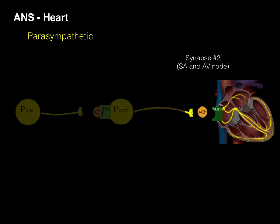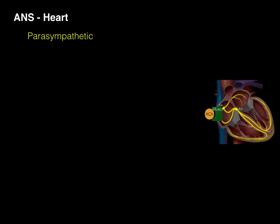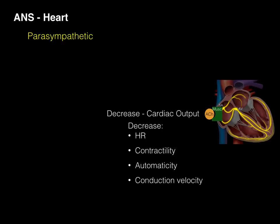Synapse number two is at the SA and AV node as well. This is a different type of cholinergic receptor — acetylcholine is now going to bind to a muscarinic receptor. When it binds to that muscarinic receptor, it's going to produce the antagonistic response to the heart, which is to decrease cardiac output: by decreasing heart rate, decreasing contractility, decreasing automaticity, and decreasing conduction velocity. The take-home message is that parasympathetic innervation binds to muscarinic receptors, and that decreases cardiac output.